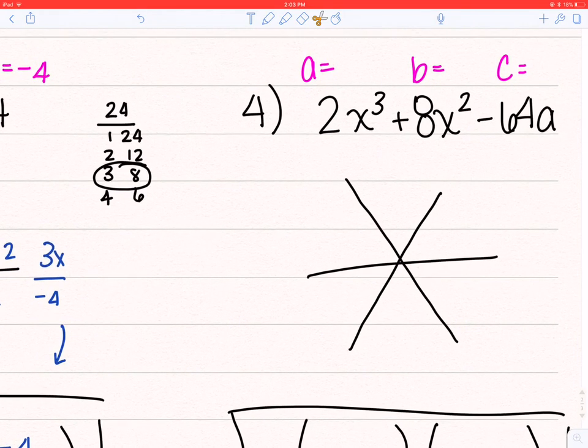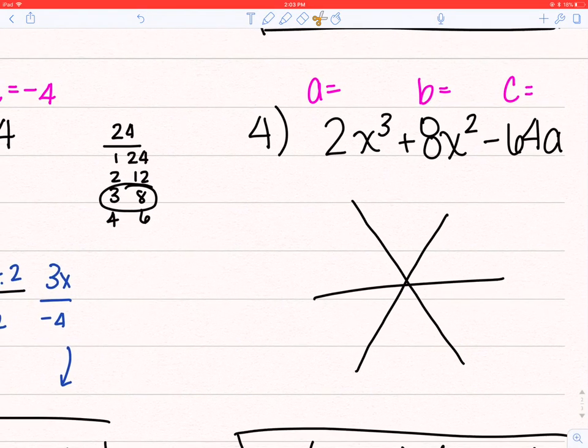Alright, my last one, 2x cubed plus 8x squared minus 64. So the first thing I check for is a GCF. And this thing right here being a cubed, I don't know how to factor a cubed. So if it's a cubed, something has to come out. So the biggest thing that 2x cubed, 8x squared, and 64x have in common is a 2x. So I can factor out a 2x of every single term.